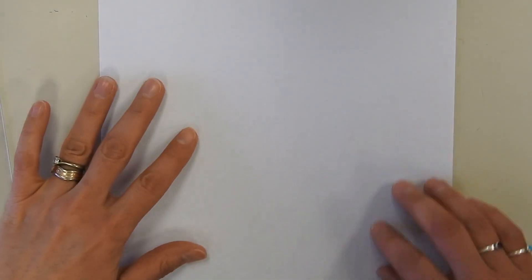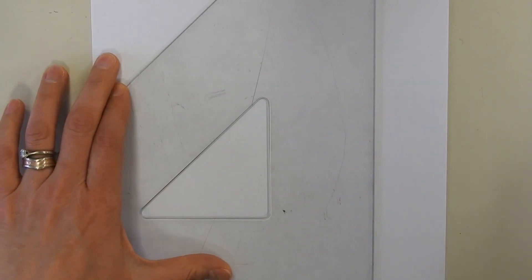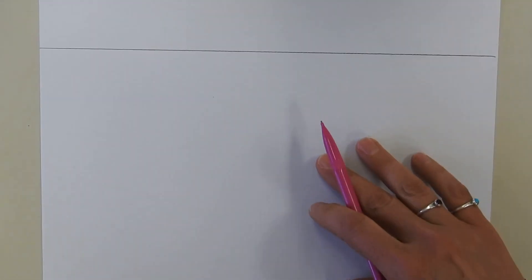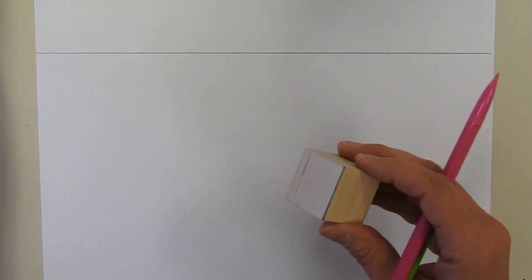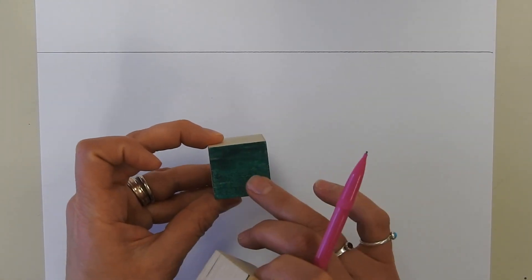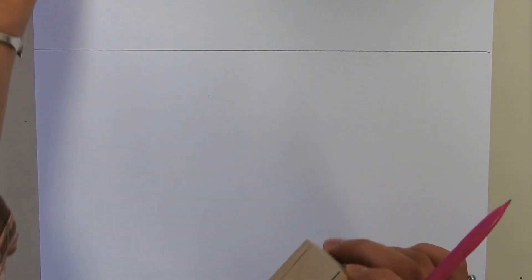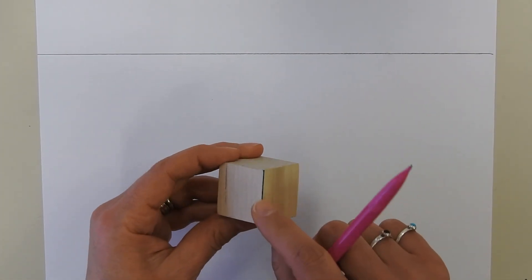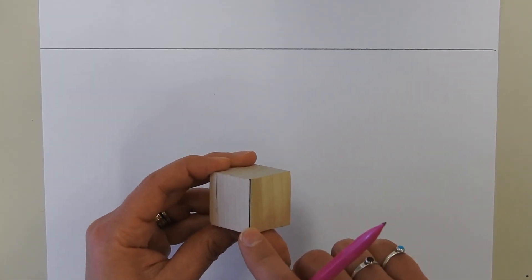And we're going to create a horizon line just like we did with the one point perspective. And we'll turn it this way. You have your horizon line on there. Now, instead of starting with a shape like this one for the one point, we're going to start with a line because that's the leading edge.